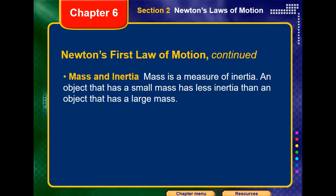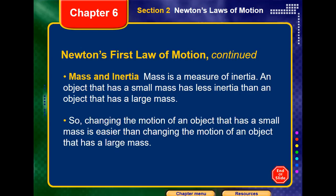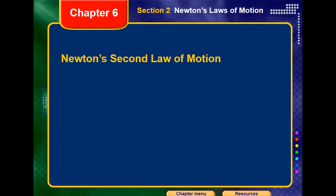Inertia depends on mass. Mass is the measure of inertia, measured in kilograms. An object with a small mass has less inertia, while objects with larger masses have large inertia. Objects with larger masses are harder to change their motion — we need to apply a lot of force to change their motion. Light objects don't have large inertia, so a simple force can change their motion. Objects with small masses are easier to change their motion than objects with large masses. That's Newton's first law.